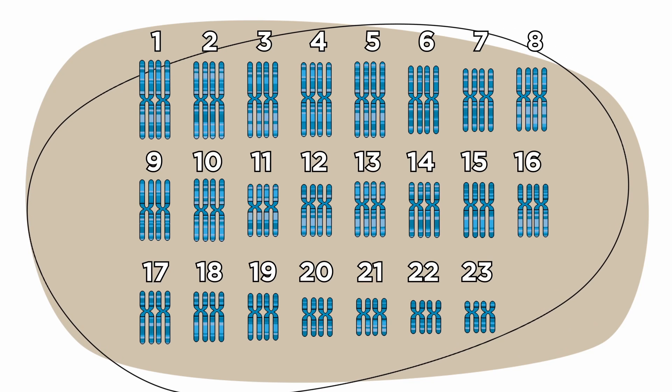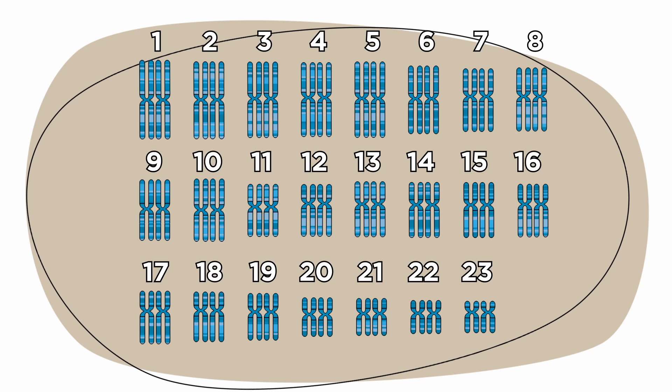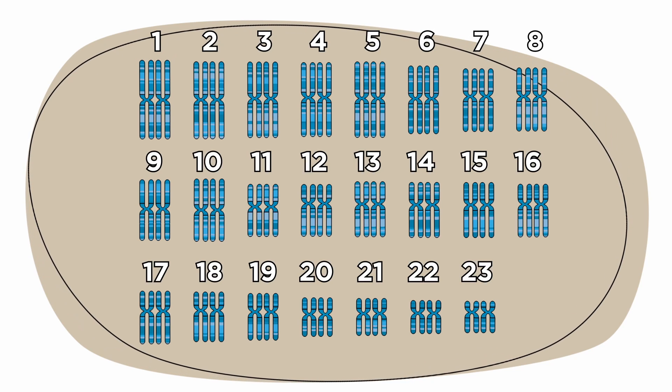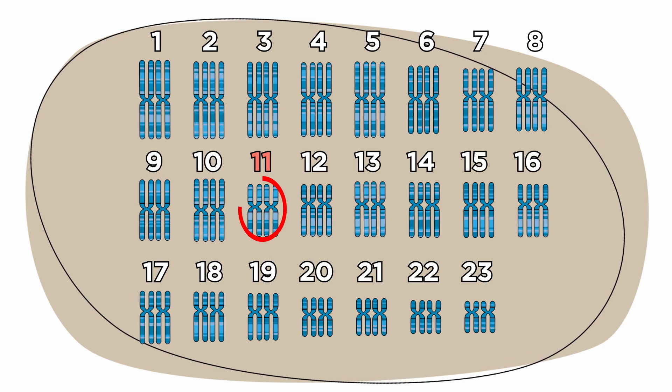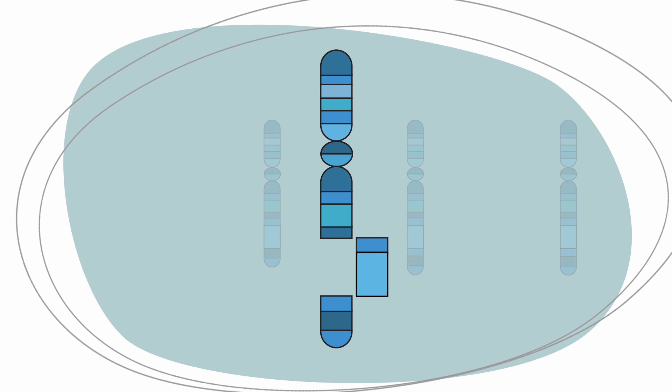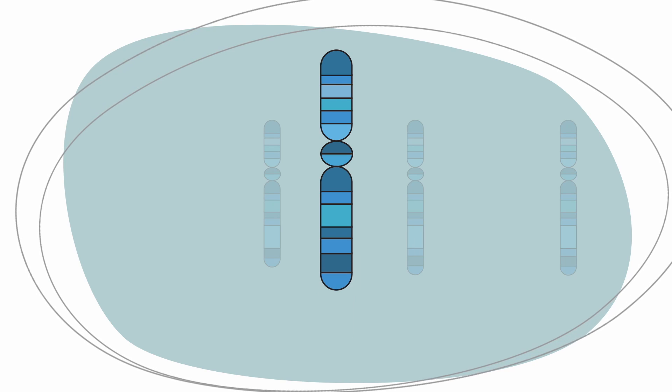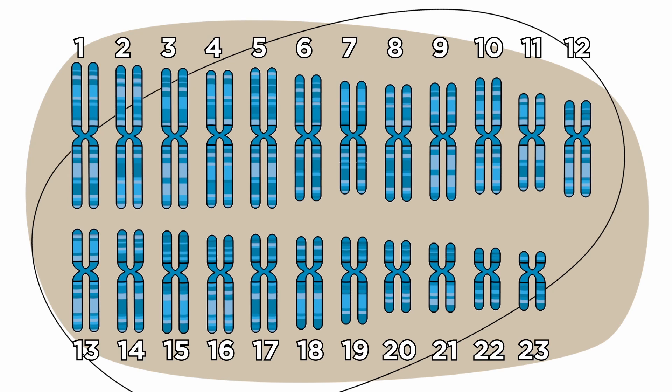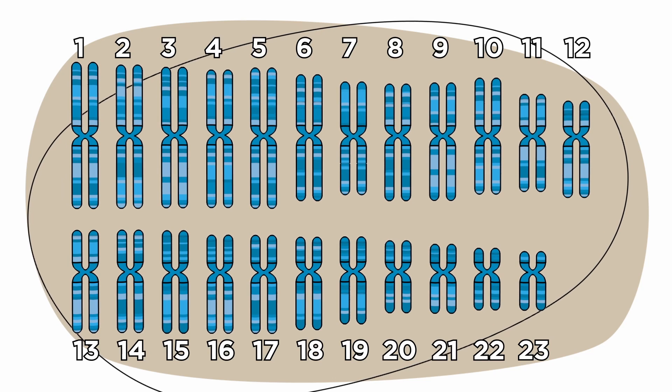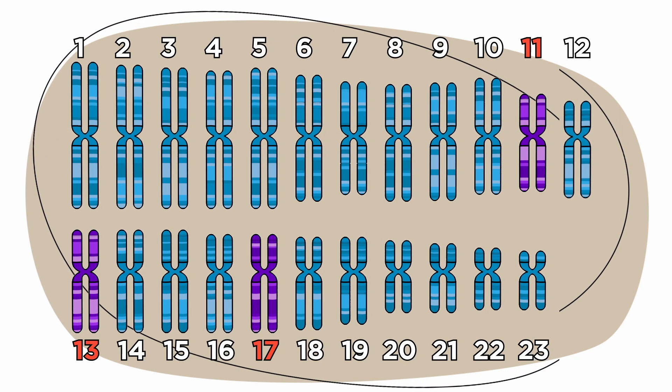About 80 percent of people with CLL have at least one of four common changes to their chromosomes. Most often the change is a deletion, which is when part of your chromosome is missing. In CLL, these deletions typically affect chromosomes 11, 13, and 17.